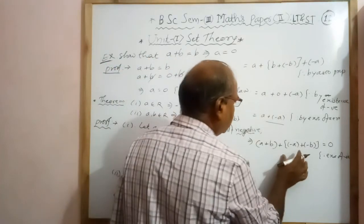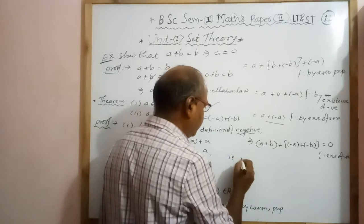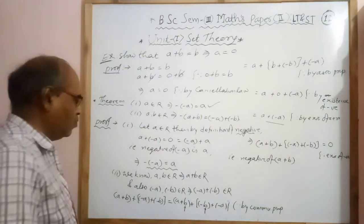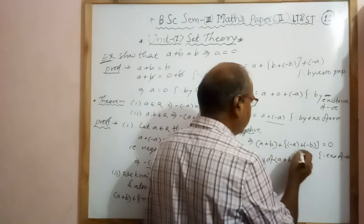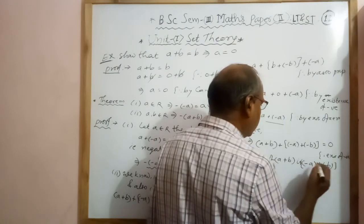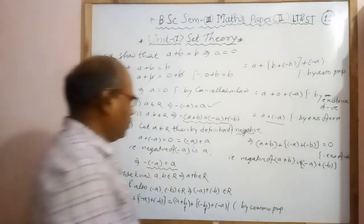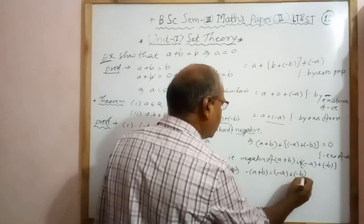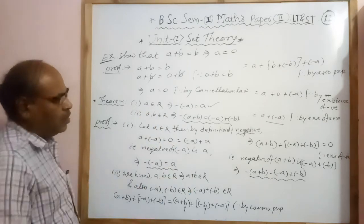From this, we conclude that the negative of A plus B is minus A plus minus B, because their addition equals 0. Therefore we write: minus of A plus B equals minus A plus minus B. This proves the second theorem. We have proved both the first and second parts, therefore the theorem is proved completely.